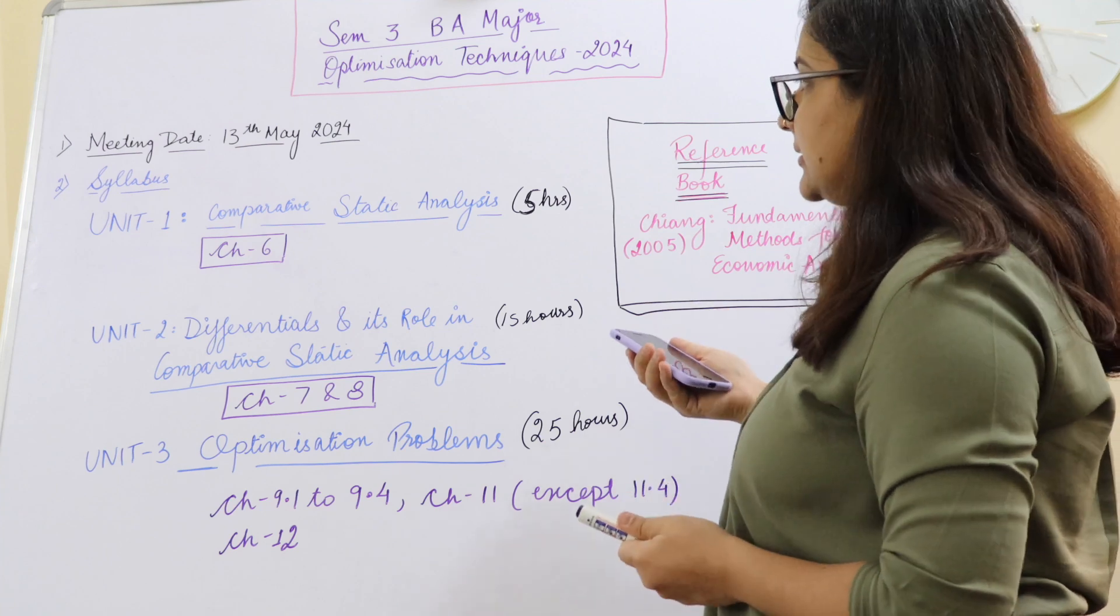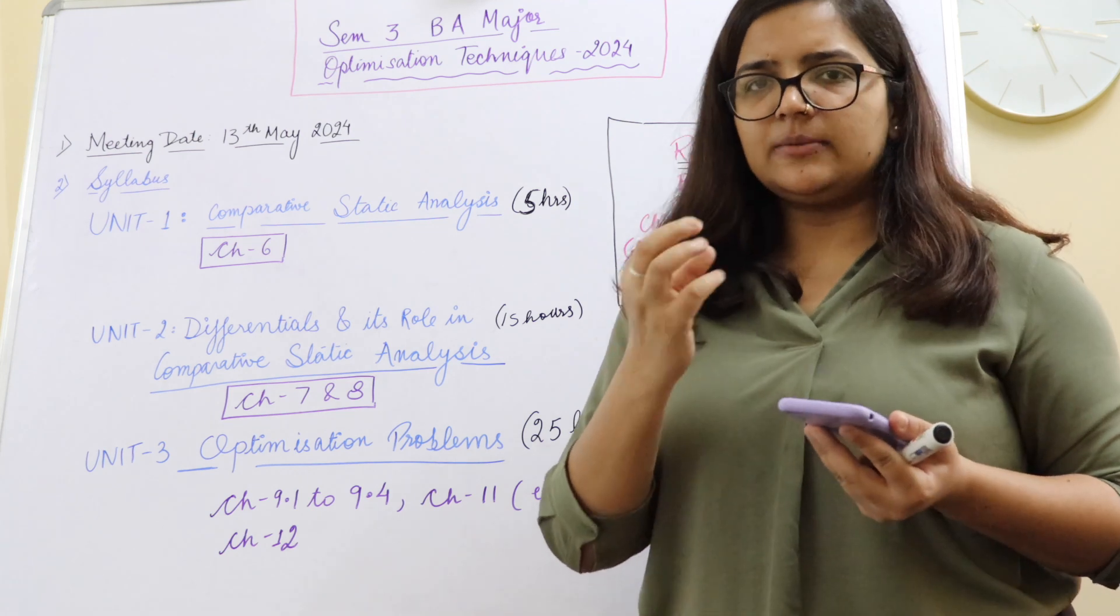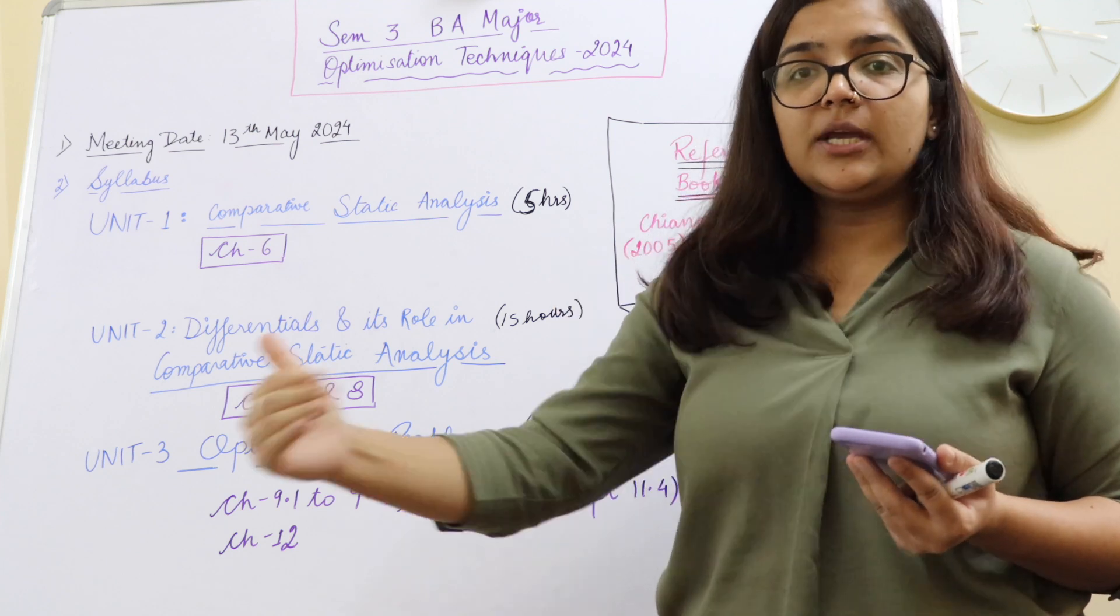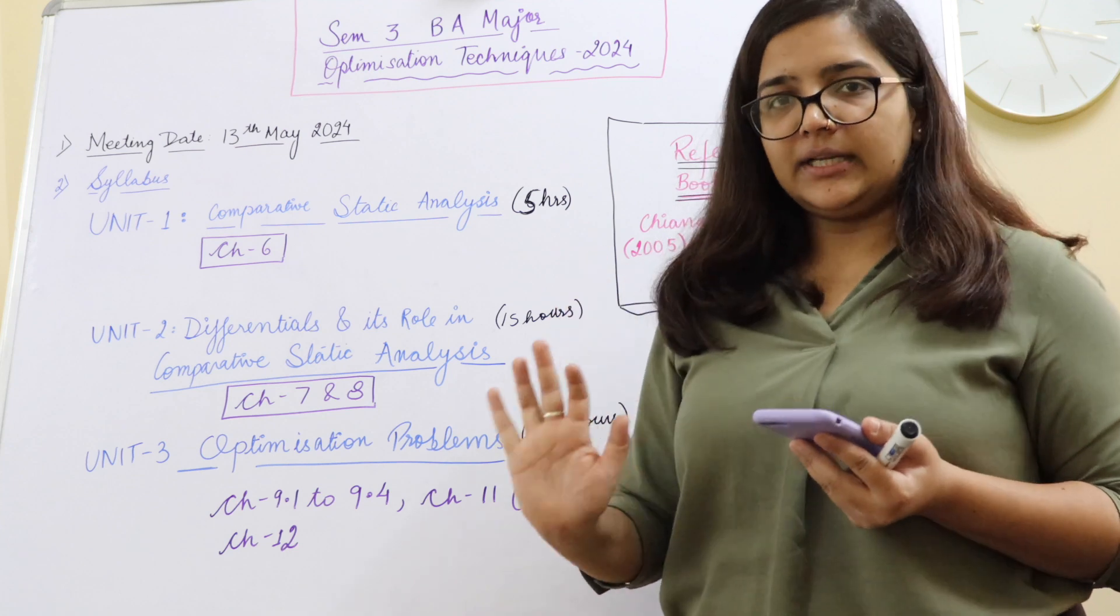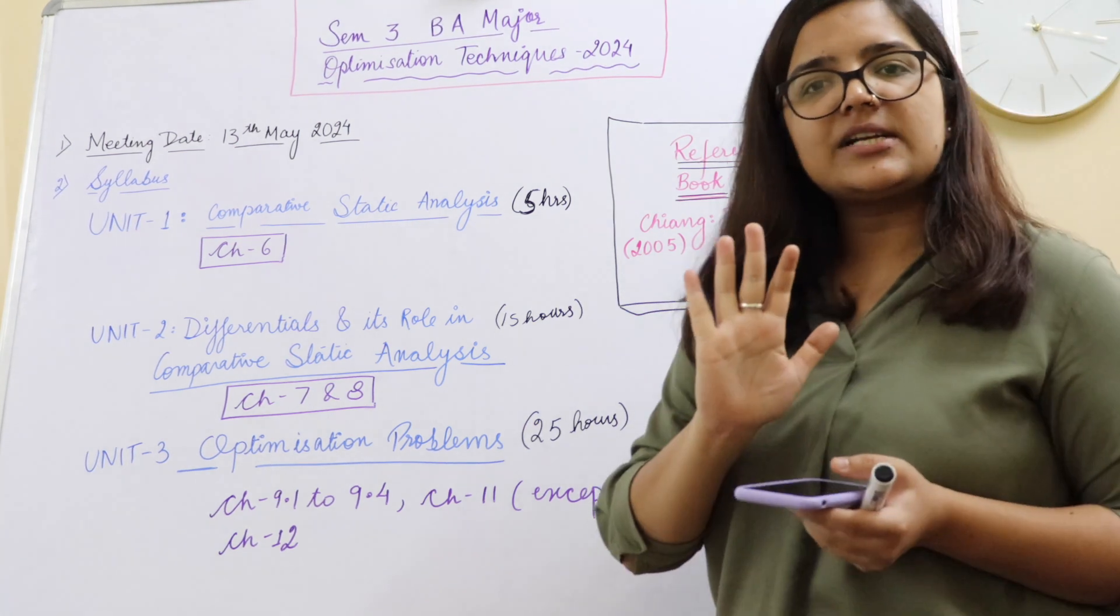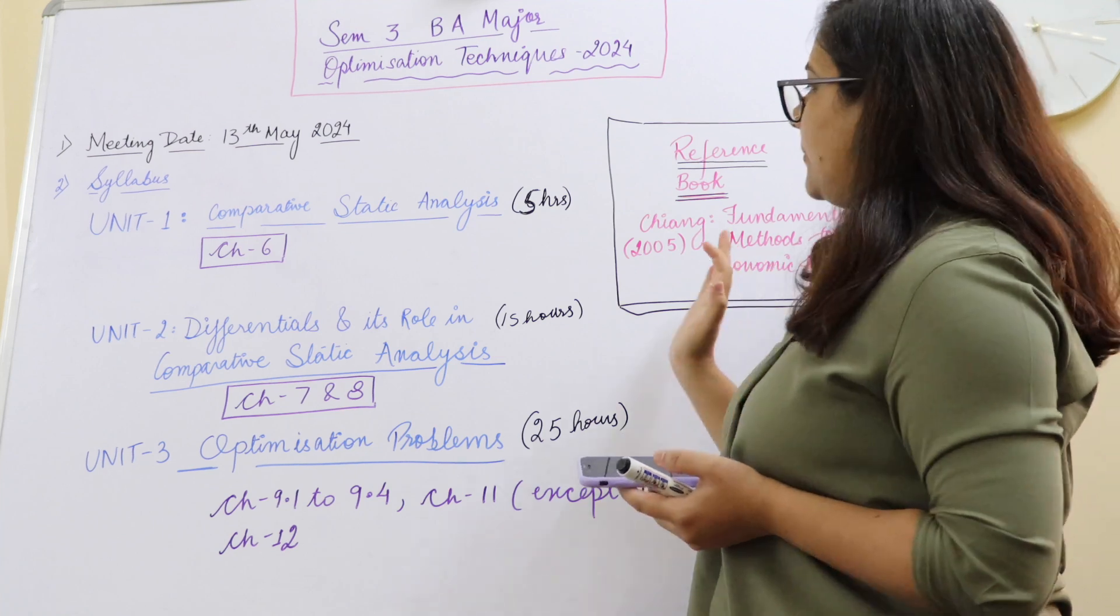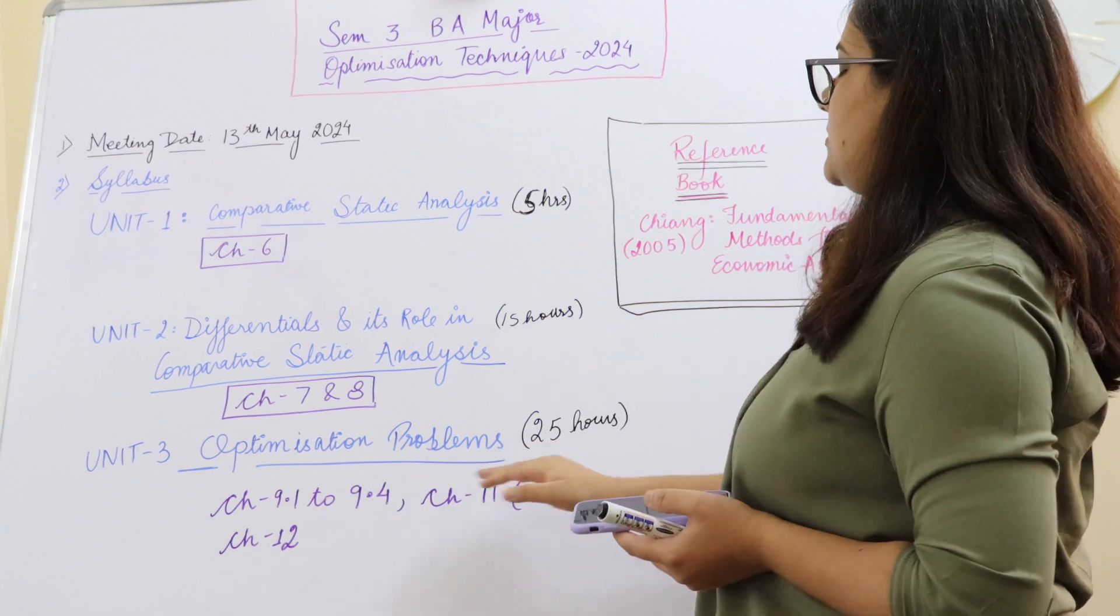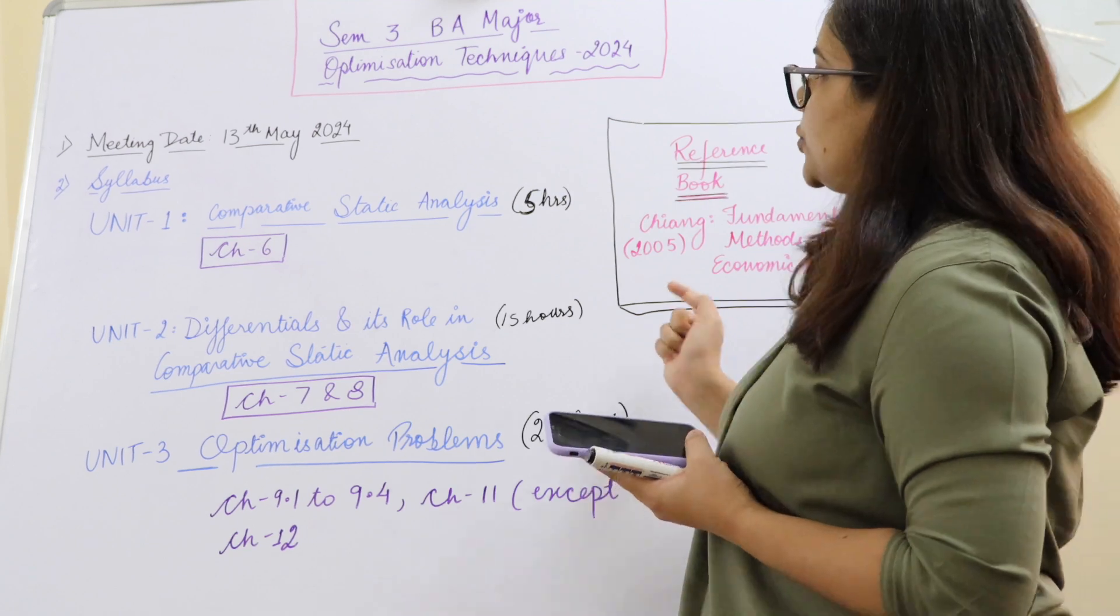So this is going to be your syllabus. So basically optimization related things that we will study, function in one variable, multivariable, how to maximize and minimize, how to do that, related concepts we are going to talk about all that in detail in this particular course which is optimization techniques. There is just a single reference book which is the Chiang book, Chiang 2005 fundamental methods for economic analysis, chapter 6, 7, 8, 9, and 11, 12 with small portions that you will have to skip here and there.